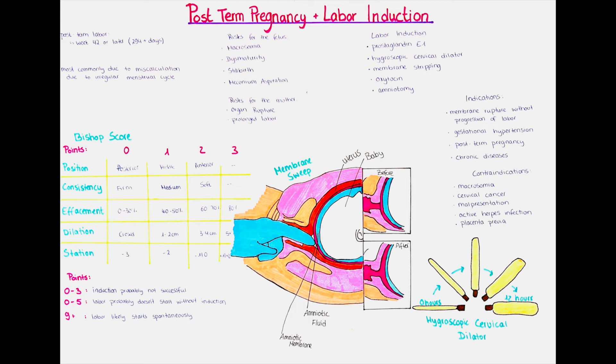Contraindications to inducing labor include severe macrosomia — so if the child is too large to be born vaginally — multi-fetal gestation (more than one baby), severe hydrocephalus (a large amount of water accumulated within the skull of the baby, which can pose a risk for vaginal delivery), malpresentation of the fetus, and a few maternal contraindications such as a prior uterine incision, a narrow pelvis, abnormal placentation such as placenta previa, or active infections such as genital herpes or cervical cancer.